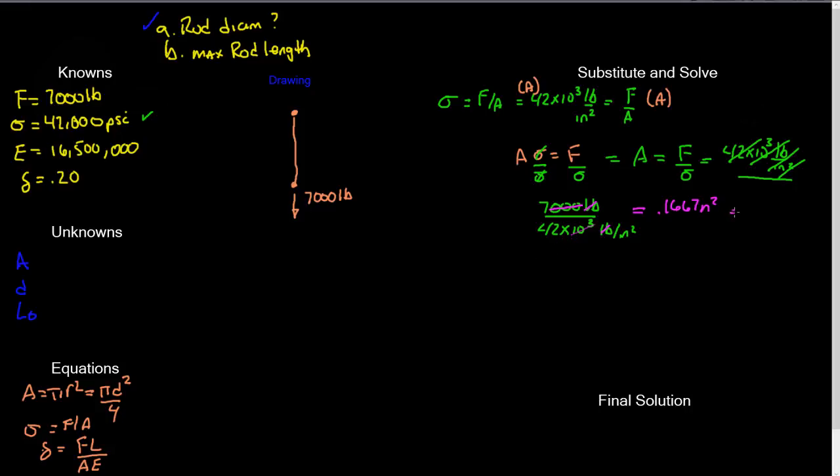So with that said, I know that that equals to pi d squared divided by 4. So I'm just going to multiply times 4 divided by pi. And I end up with 0.212314. So d squared equals 0.2122 inches squared.